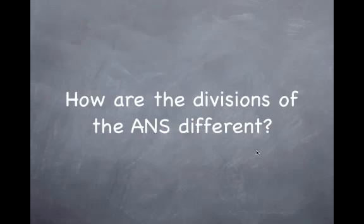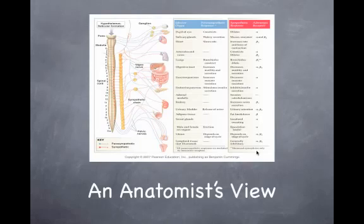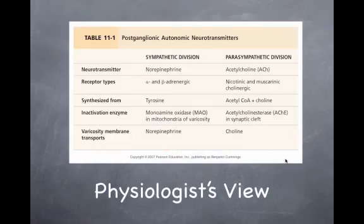How the divisions of the ANS are different depends on whether or not you're an anatomist or a physiologist. In an anatomist's view, what you guys learned in anatomy, it's all very complicated in that you have lots of different nerves to worry about, and it becomes a huge memorization exercise. As you guys know, this is not the way that we look at things in physiology. This is the physiologist's view of the sympathetic versus parasympathetic.